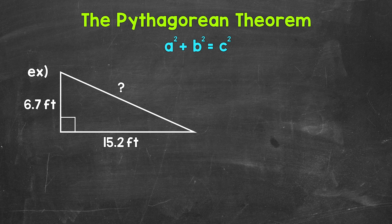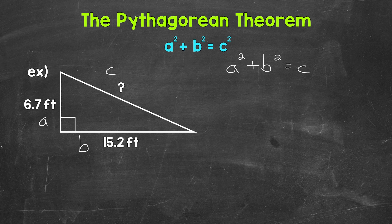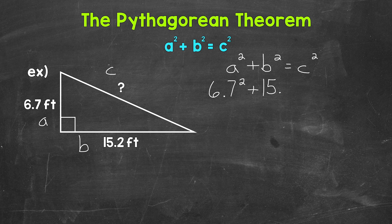Let's jump into our first example where we have a right triangle and the lengths of the legs are given, so we need to find the length of the hypotenuse. Let's call this leg a and this leg b, and then the hypotenuse is always c. So we are going to use a squared plus b squared equals c squared. Now we can plug in what we are given: a is 6 and 7 tenths feet and b is 15 and 2 tenths feet, so 6.7 squared plus 15.2 squared equals c squared.